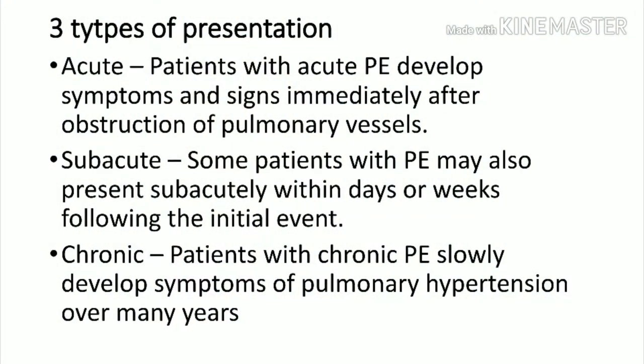There are three types of clinical presentation for pulmonary embolism. First is acute — the patient suddenly presents with severe breathlessness, chest pain, and hypotension. Second is subacute — the patient slowly develops breathlessness following the initial event, with multiple emboli in the pulmonary arteries. Third is chronic — it takes years to develop full-blown pulmonary hypertension. So acute, subacute, and chronic types are all seen in clinical scenarios.